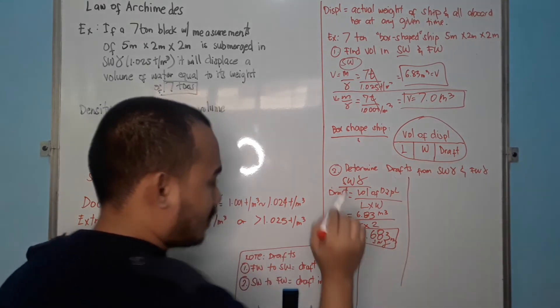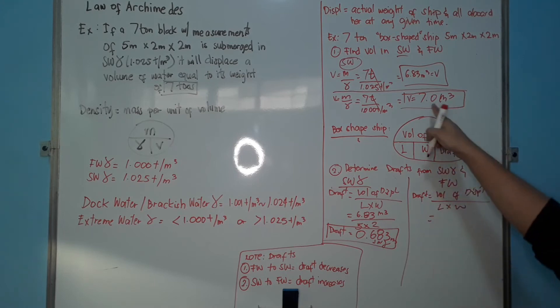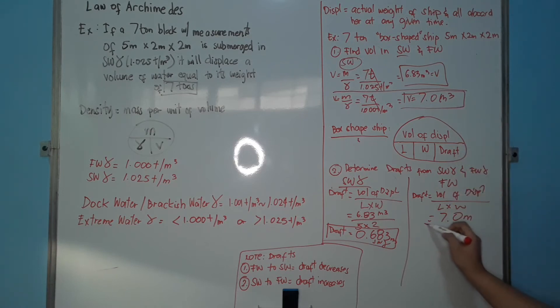For fresh water, if we try to find the draft equals volume of displacement divided by length times width. What's the volume of displacement again? 7.0 from the answers earlier, divided by your 5 times 2. So, the draft will be in fresh water density, fresh water density will be 7 divided by 5, divided by 10 will be equals to 0.70.